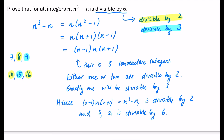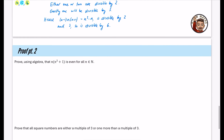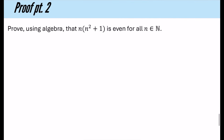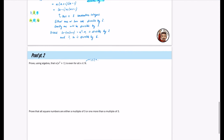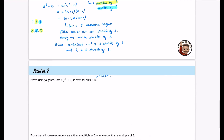You might think you'd never be able to do that, but now if you ever see something like this, you can think: I'm not getting any 6s directly, so is there another way to show it? The same applies to something like 15 — you could show it's divisible by 3 and by 5. Now, proof part 2. We are going to prove using algebra that n(n squared plus 1) is even for all n which are members of the natural numbers — the positive integers 1, 2, 3, 4, etc.